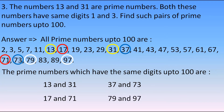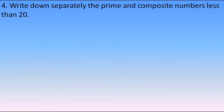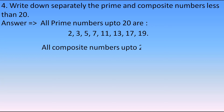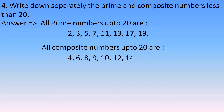Now let's move to the fourth question: write down separately the prime and composite numbers less than 20. All prime numbers up to 20 are: 2, 3, 5, 7, 11, 13, 17, 19. All composite numbers up to 20 are the remaining numbers: 4, 6, 8, 9, 10, 12, 14, 15, 16, 18, and 20.